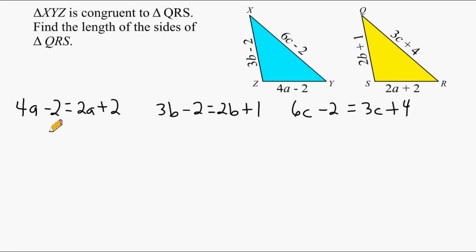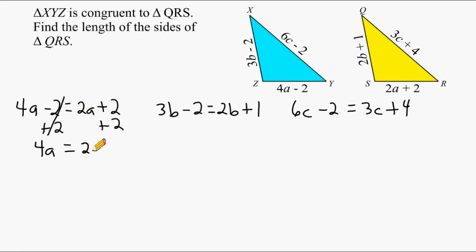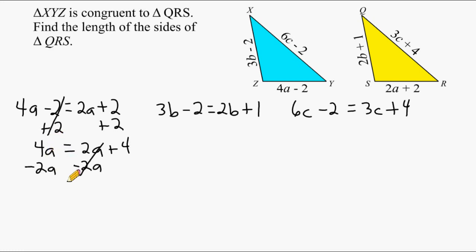Starting with the first equation: we do the inverse of minus 2, which is to add 2. Remember, when solving equations, what you do to one side, you must do the same on the other side. The opposites cancel out on the left, leaving us with 4A. On the right-hand side, we still have 2A, and 2 plus 2 gives us 4. Now we take 2A and subtract it from both sides, which would leave nothing on the right side. Subtracting 2A from 4A leaves us with 2A, and on the right-hand side we still have 4.